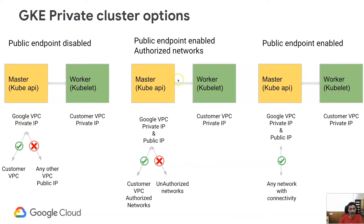In the second scenario, we have a public endpoint enabled with authorized networks. This is a slightly less restricted mode. In this case, the master has both a private IP and a public IP, and access is allowed only from authorized networks we set up. The third one is the public endpoint enabled mode, which is the least restrictive mode from a private cluster perspective. In this case, the master has private and public IPs, and as long as we have connectivity to the master, we will be able to connect to it.